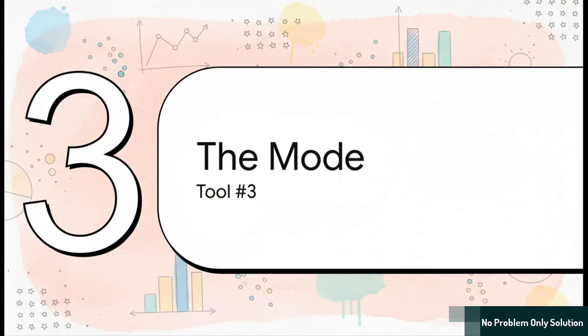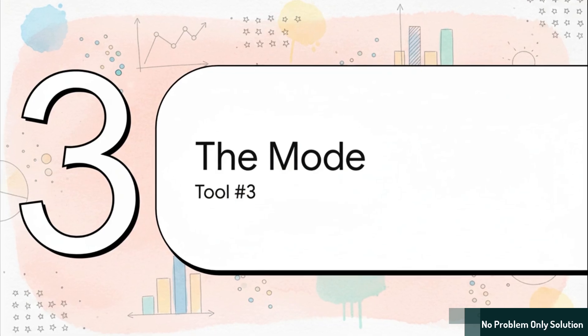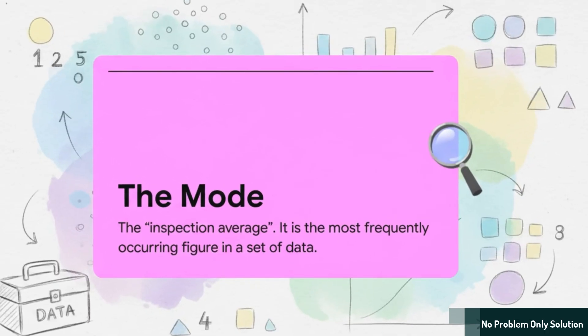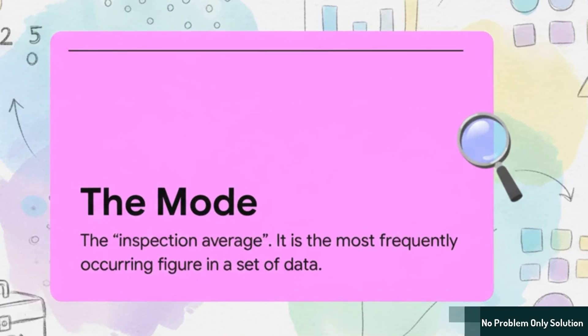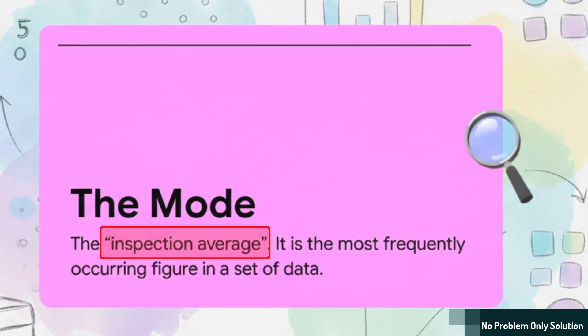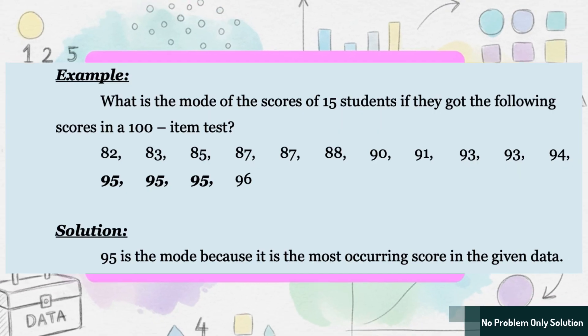Now, let's get back to business and pull out our last tool from the kit. This one is often the simplest one of all. It's time to meet the mode. The mode is known as the inspection average. And again, it's a great name. Why? Because you can usually find it just by inspecting the data. You know, just by looking at it. All it is, is the number that appears most frequently. It's the most popular, the most common value in the whole set.